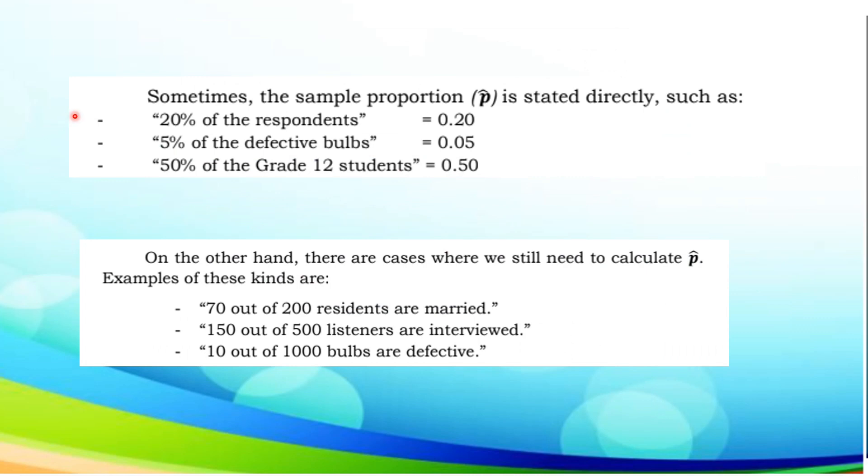Sometimes, the sample proportion p-hat is stated directly such as 20% respondents or 0.20, 5% of the defective bulbs or 0.05, 50% of the degree students or 0.50. On the other hand, there are cases where we still need to calculate for the p-hat or the sample proportion. For example, 70 out of 200 residents are married, 150 out of 500 listeners are interviewed, 10 out of 1,000 bulbs are defective.